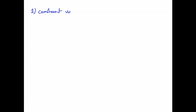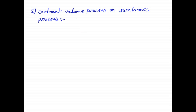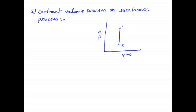The second process is the constant volume process, also called the isochoric process. If we draw a PV diagram for this process, here it is P on the vertical axis and V on the horizontal axis. In constant volume process, the volume is constant. If we consider a process with two states — initial state 1 and final state 2 — the diagram will be a vertical line because volume is constant and pressure is varying.